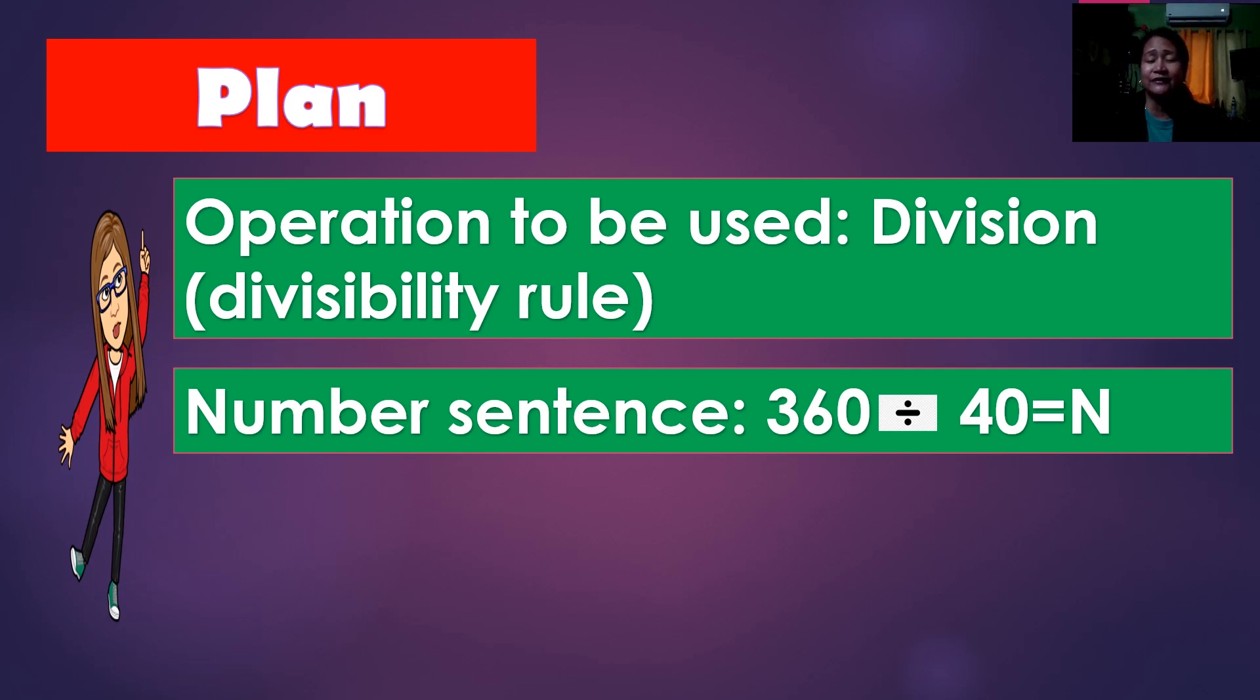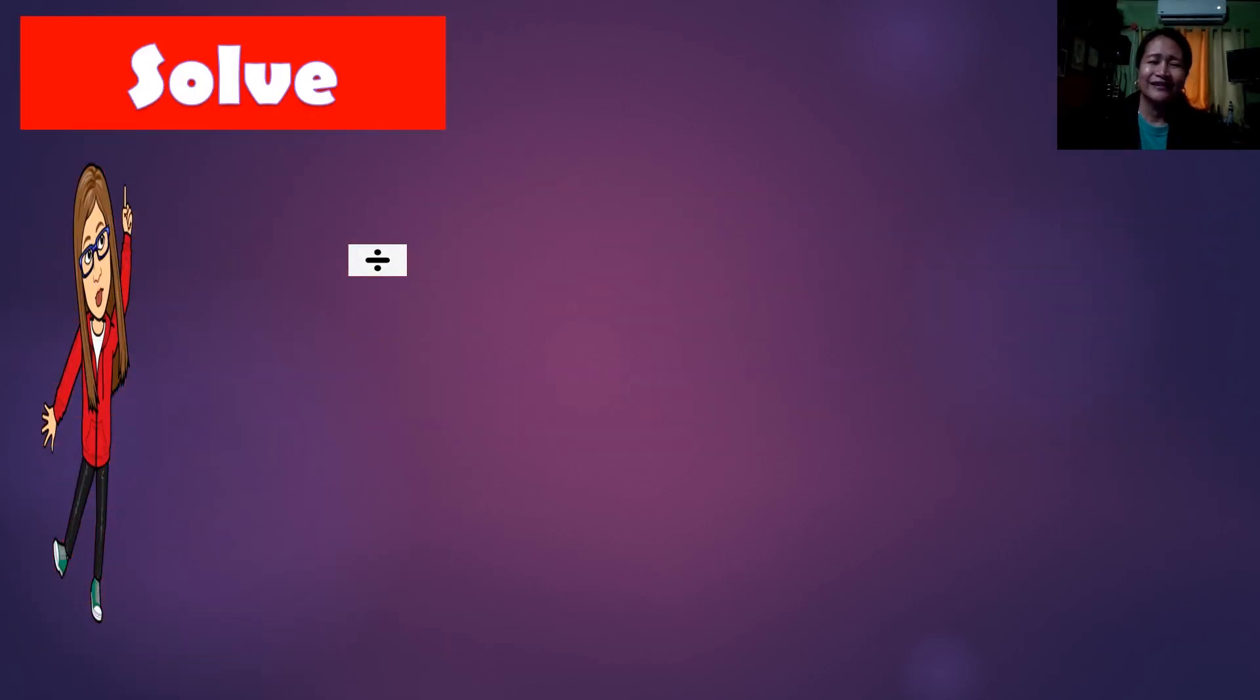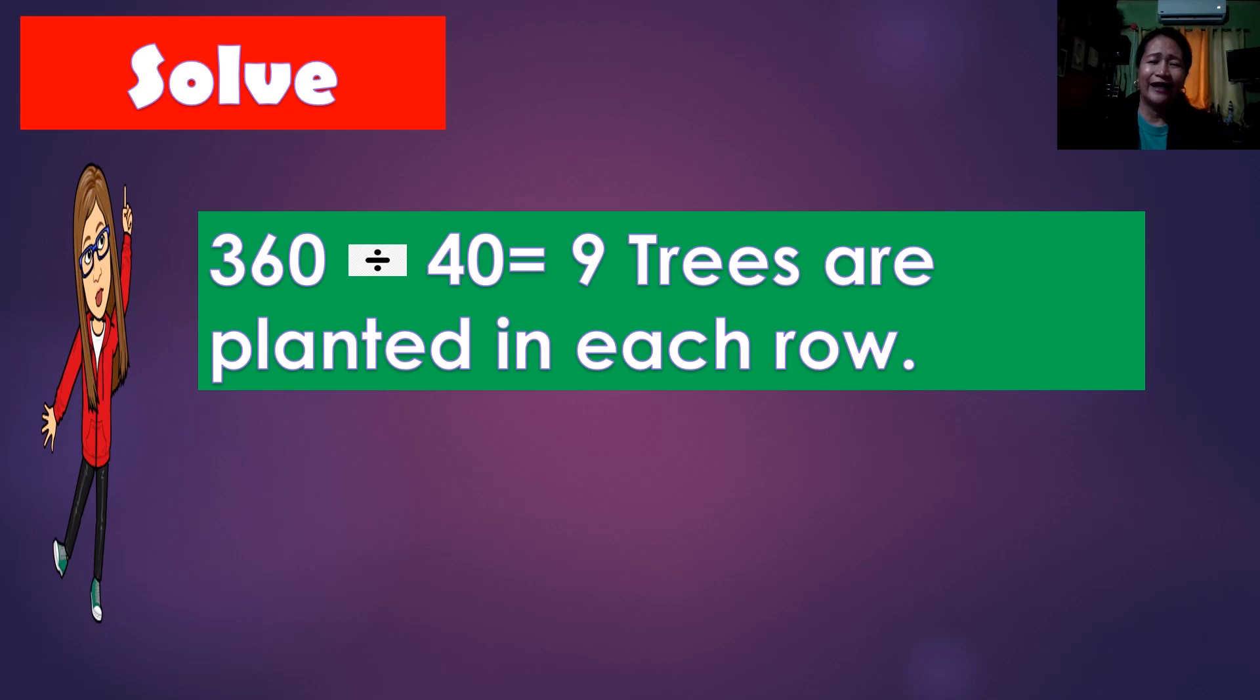Okay, let us see. Let us solve. 360 divided by 40 is equal to 9 trees are planted in each row. Correct.